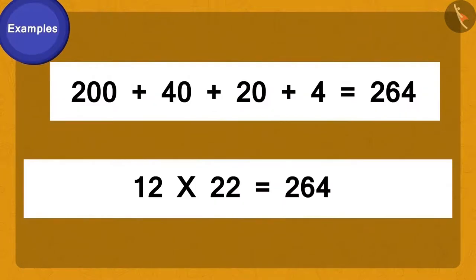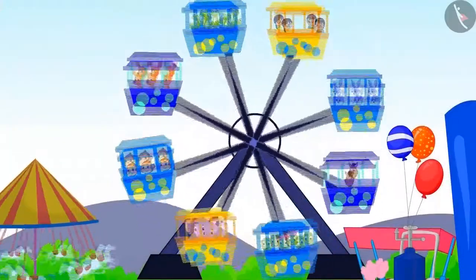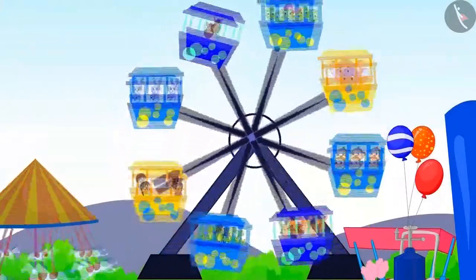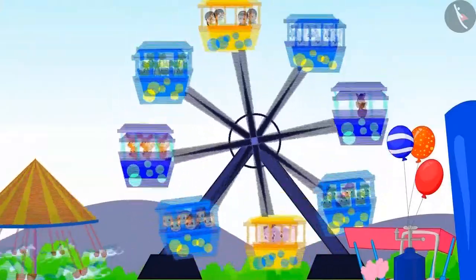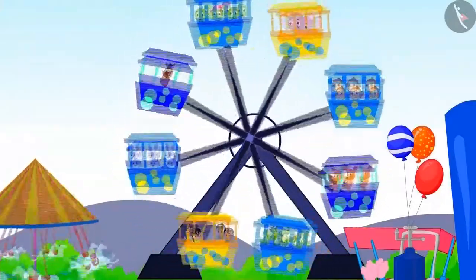Adding 40, 200, 4, and 20, our answer is 264. Following this method, 12 times 22 is 264. A total of 264 people can ride the ferris wheel in a day.